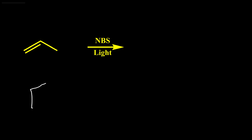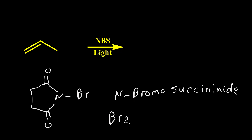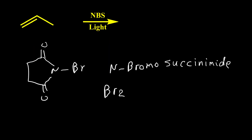NBS is a source of bromine, and its structure is shown here. The name of this compound is N-bromosuccinimide. This compound always has a trace of bromine for initiating the reaction. So the first step of the reaction is exactly like a reaction with Br2.